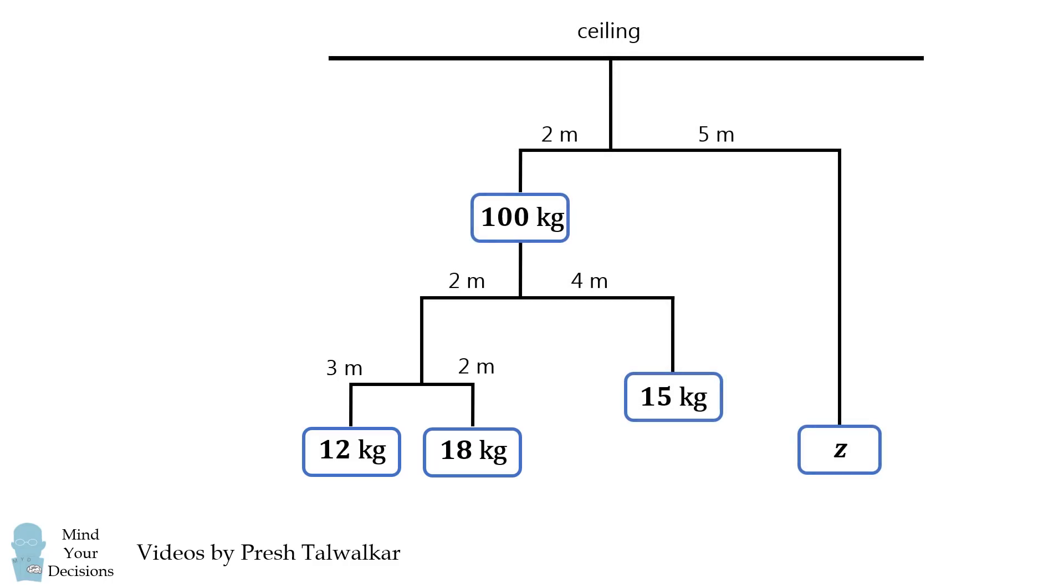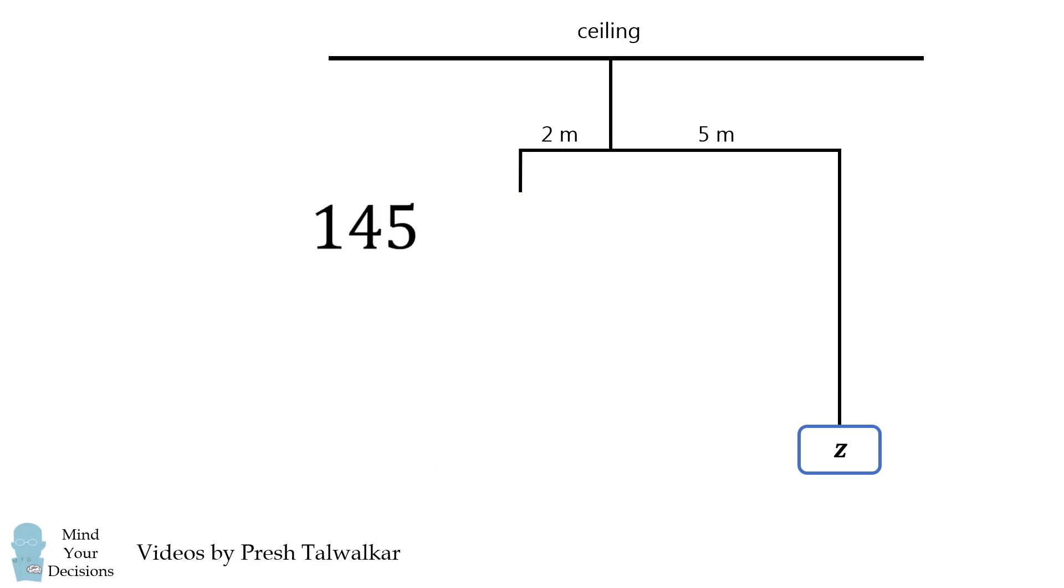We've now solved the left side of this diagram. Let's calculate the total mass. This is a total mass of 30. This is 15, and here is 100. We add these up to get 145. That'll be the mass on the left side of the system. We then have 145 multiplied by 2 will be equal to Z times 5. We then solve for Z, and we get the answer of 58 kilograms.